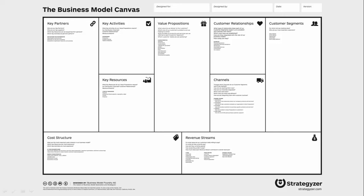The business model canvas covers things like: what is the proposition to the customer, how's the business going to make money, what kind of revenue streams exist, what costs exist, what key resources are required. It's a really good way of thinking about those questions. A little while ago I attended a workshop that utilised the business model canvas and I thought this would work really well for services — some key stuff seemed missing, so I've taken it and remodelled it slightly.